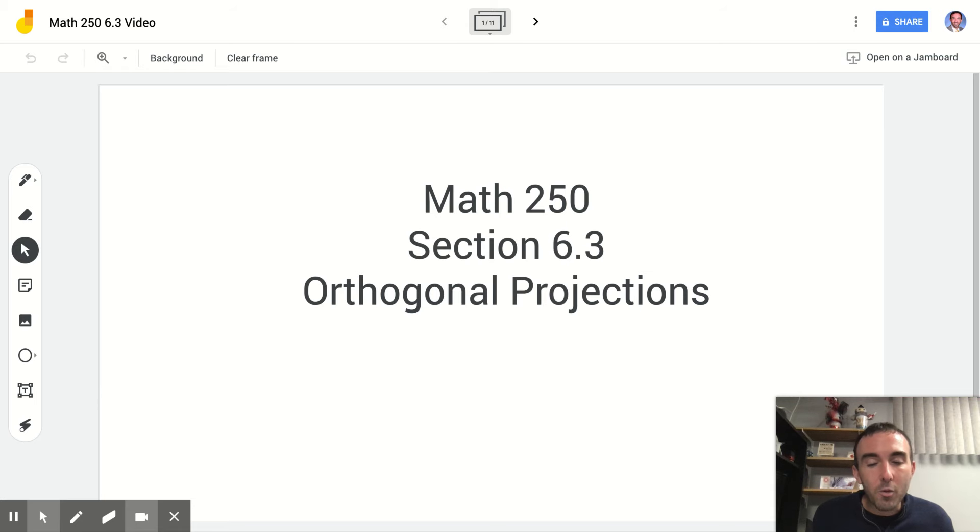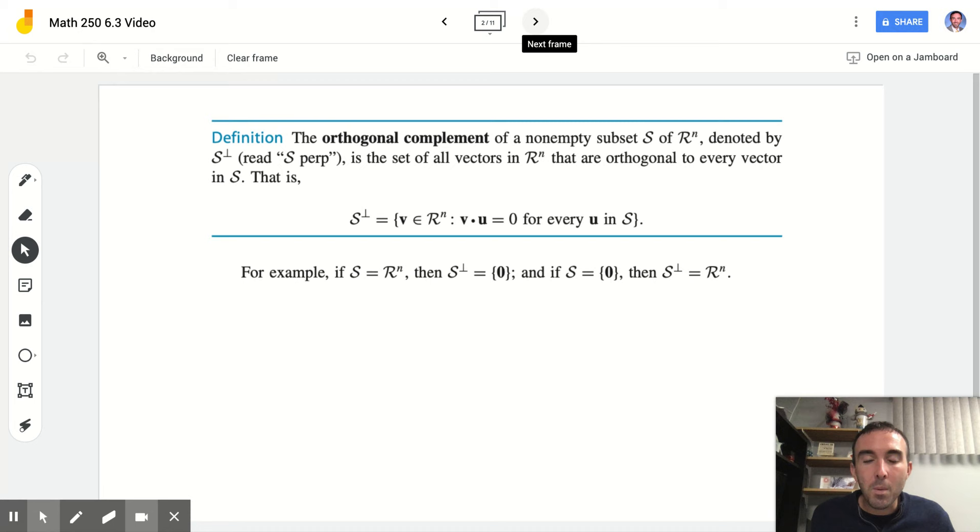Hello, and welcome to Math 250, Section 6.3. This is a lesson on orthogonal projections. We're going to begin with the definition. The orthogonal complement of a non-empty subset S of R^n, denoted by S perp, that looks like an upside down T as an exponent, is a set of all vectors in R^n that are orthogonal to every other vector in S.